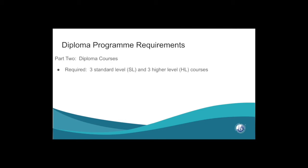For your Diploma courses, you are required to take three Standard Level and three Higher Level courses. The difference between Standard Level and Higher Level is the amount of material and the pace at which the courses move. Higher Level means more material and faster pace. Standard Level is still a really fast pace and a difficult course, but there's less material to cover, so you get to spread it out over the two years a little bit better.